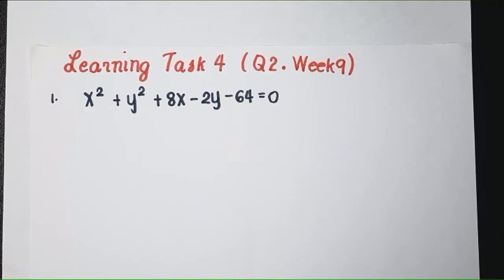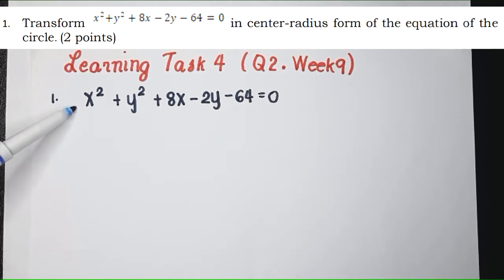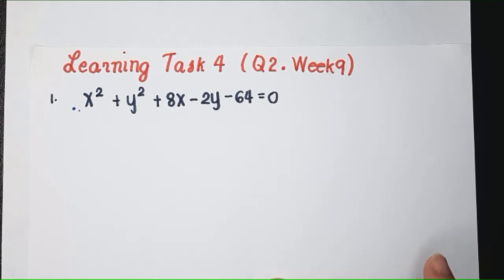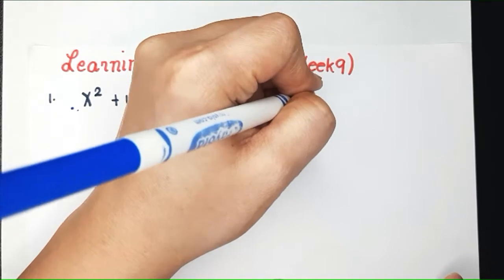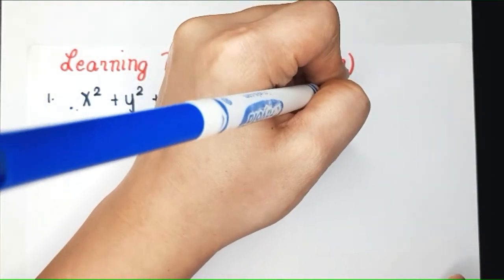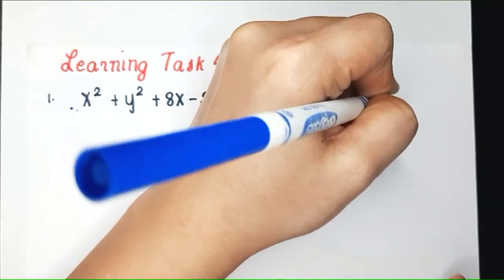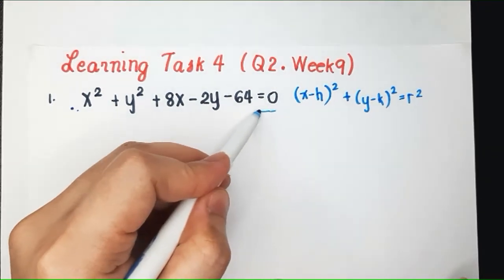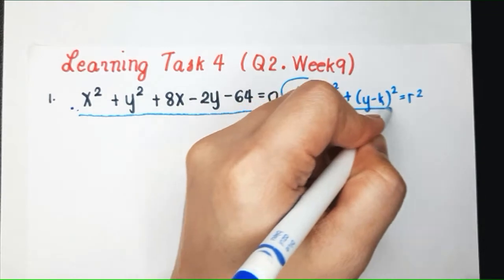This is Learning Task 4 of Week 9 of your module. Number 1, we're given this equation of the circle written in general form, and we're going to write this in its center radius form, or the standard form. Let us recall the center radius form, or the standard form of the equation of the circle.